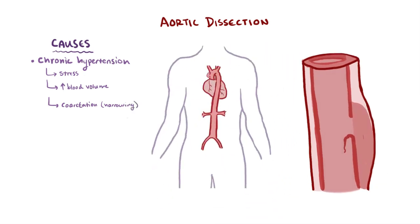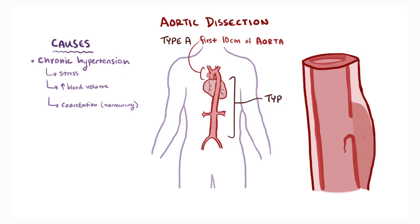Aortic dissections most often happen in the first 10 cm of the aorta closest to the heart. A tear near the heart or in the upper aorta is considered a type A aortic dissection in the Stanford classification system. Type B aortic dissections involve tears in the lower or descending aorta. Both type A and B aortic dissections can extend into the abdomen.